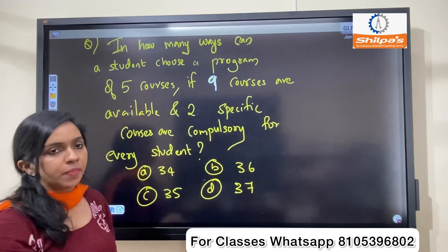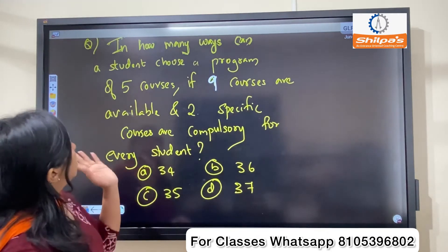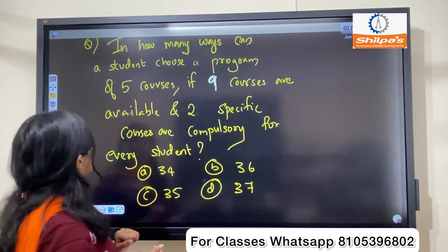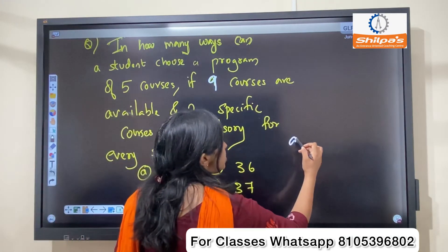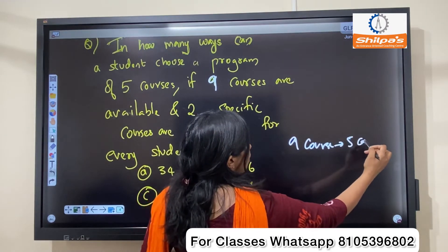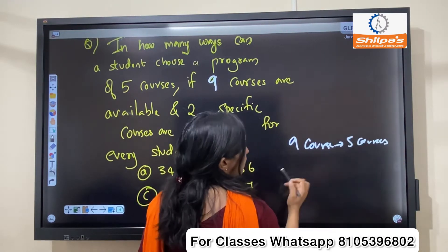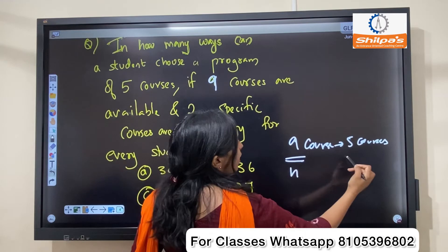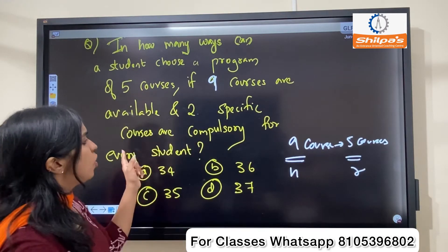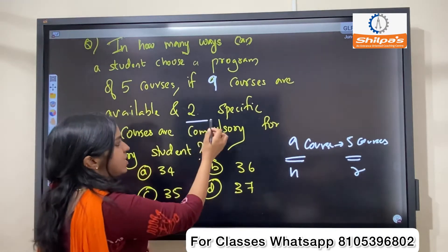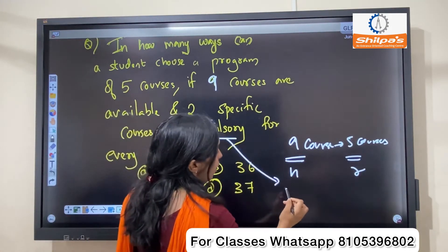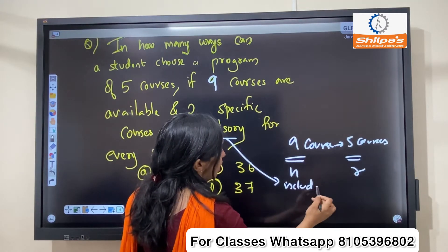So, 4 options are available. Here we have 9 courses — 9 courses are compulsory for every student, and 5 courses are selected. So this is N and this is R. 2 specific courses are compulsory — compulsory means included. Included case is included.